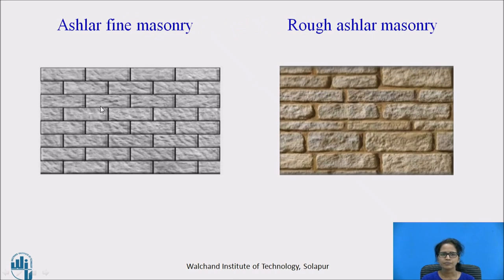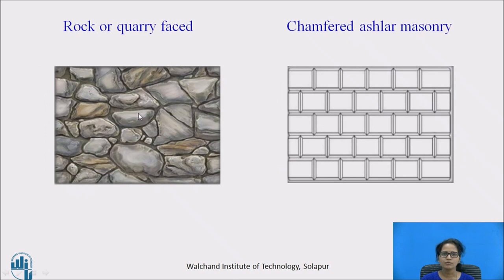In ashlar fine masonry, the stones are finely chisel-shaped. This is costly in construction, and the stones are of uniform rectangular size with horizontal and vertical joints between them. In rough tooled ashlar masonry, the stones are roughly dressed and a 25 mm wide strip is used along the perimeter of the stones. In rock or quarry faced masonry, it is similar to rough ashlar masonry, but the remaining portion brought from the quarry is left as it is.